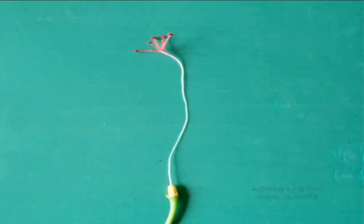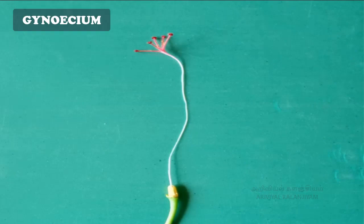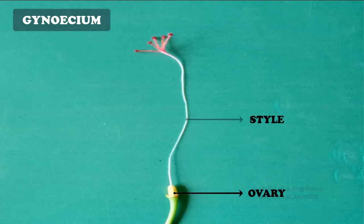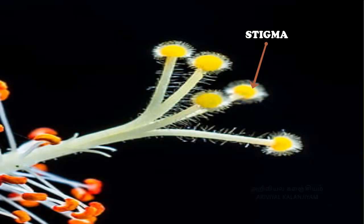Inner to this androecium whorl, we can find the female reproductive parts of the flower, called gynoecium. You will find this part with a swollen bottom part — this is the ovary. Seeds are produced in this part. On the top of the ovary, there is a slender tube-like structure called style. The topmost sticky tip of the style is stigma. Pollen grains are received by the stigma.